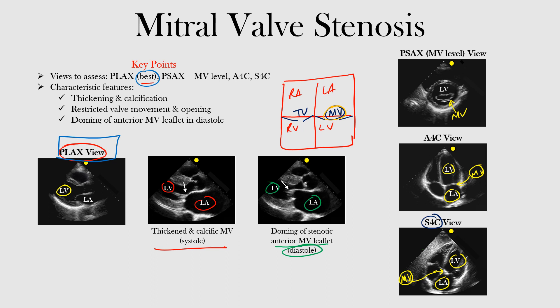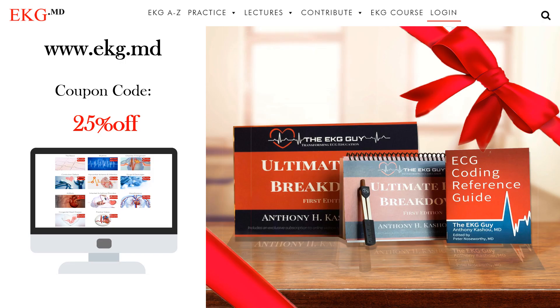Let's recap what we discussed. The views to assess mitral valve stenosis: the best one is the parasternal long axis view; you can also assess it in the parasternal short axis view at the mitral valve level, the apical four chamber view, and the subcostal four chamber view. If you're not sure how to get to those views, go back and listen to the earlier lectures. The features to look for are thickening and calcification of the valve, restricted valve movement and opening, and — seen in the parasternal long axis view — doming of the anterior mitral valve leaflet in diastole.